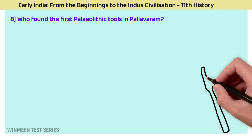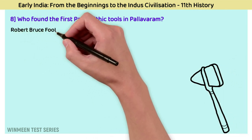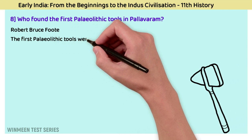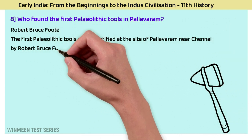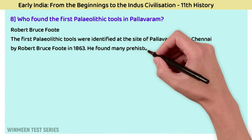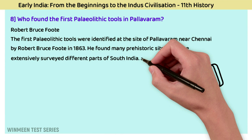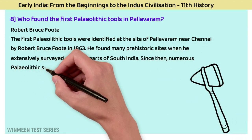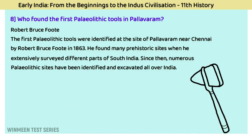Question 8: Who found the first Paleolithic tools in Pallavaram? The answer is Robert Bruce Foote. The first Paleolithic tools were identified at the site of Pallavaram, near Chennai, by Robert Bruce Foote in 1863. He found many prehistoric sites when he extensively surveyed different parts of South India, and since then numerous Paleolithic sites have been identified and excavated all over India.